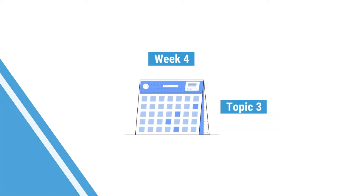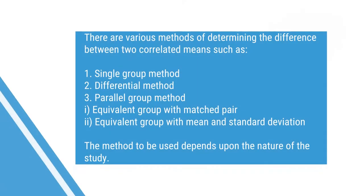Welcome to Week 4, Topic 3. In this topic, we will take up the difference between two correlated means, pertaining to correlation between two measures of two different conditions — that is, the degree of association of two random variables. There are various methods of determining the difference between two correlated means. Some important methods are: single group method, differential method, parallel group method, etc. The method to be used depends upon the nature of the study.